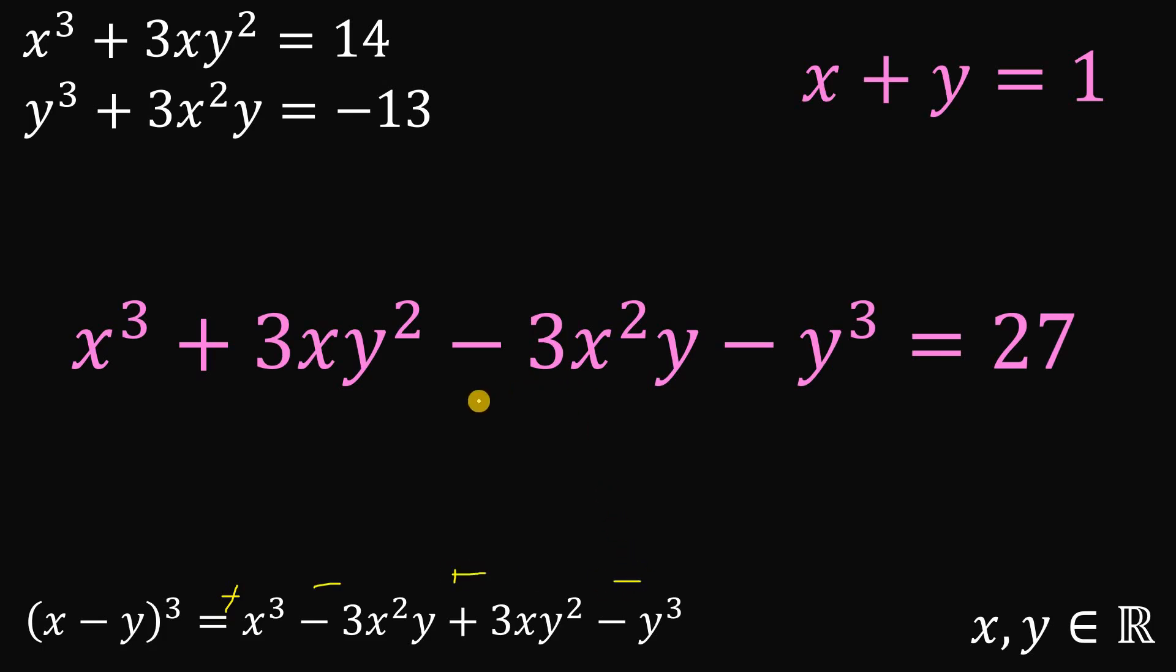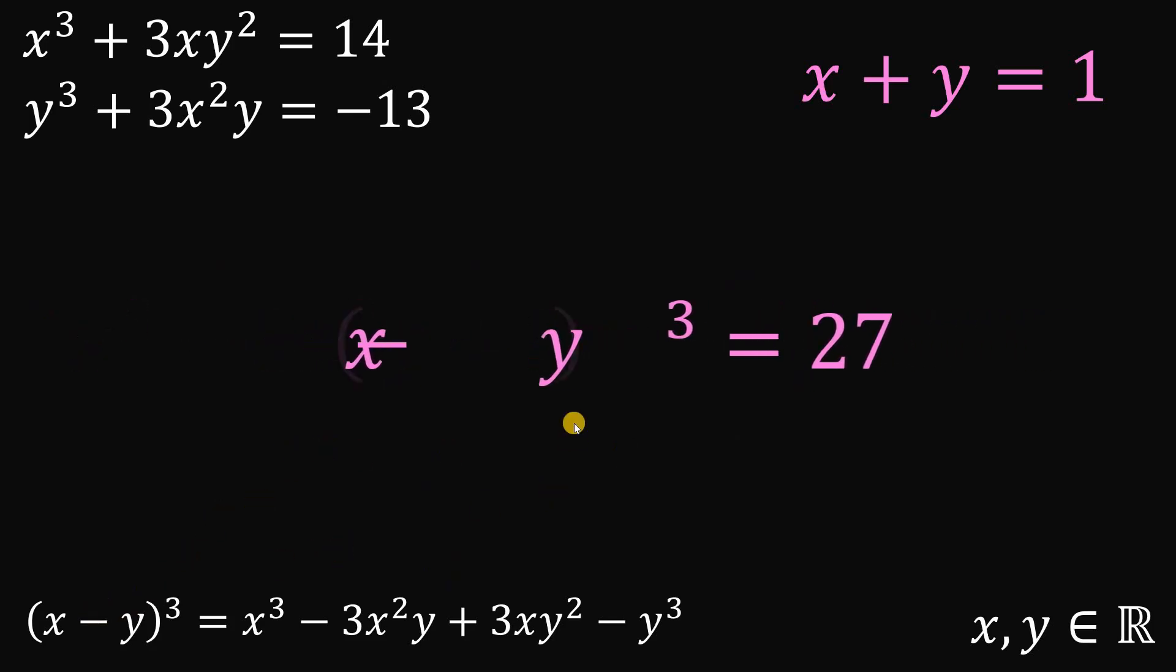And in our given equation, if we rearrange some terms a little bit, this is exactly this expression. So we have x³ - 3x²y + 3xy² - y³. So we can replace this by (x - y)³. Again, this 27 is 3³, so we can say that x - y = 3.